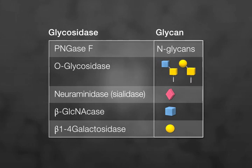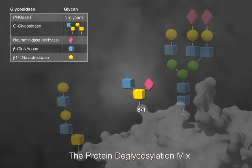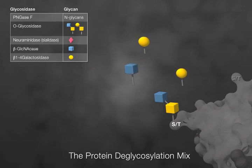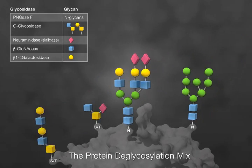The exoglycosidases sialidase, beta-GlcNAcase, and beta-1,4-galactosidase can be used to trim down O-glycans to their core structures. The protein deglycosylation mix can remove short O-glycans and longer-chain O-glycans in a step-by-step reaction. The mix also removes N-glycans.